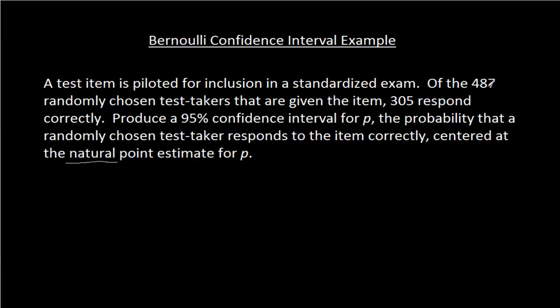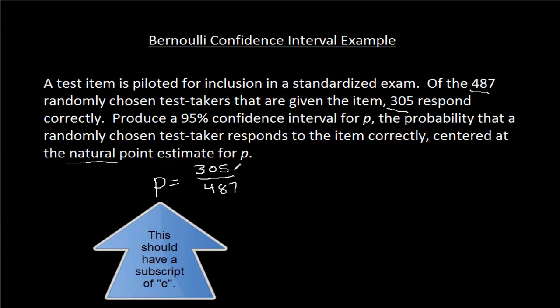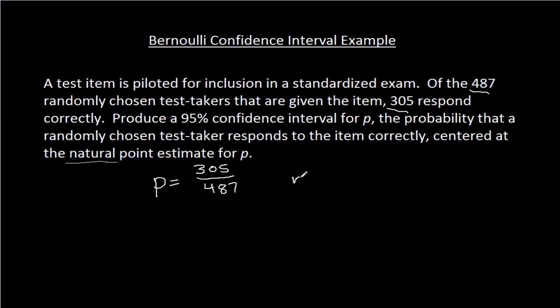We had 487 test takers, and of those 487, 305 responded correctly. So if I want the probability that a randomly chosen test taker responds correctly, then my natural point estimate, just meaning one value, is 305 over 487. It's the experimental probability, or we've called it the relative frequency. That's my natural point estimate.